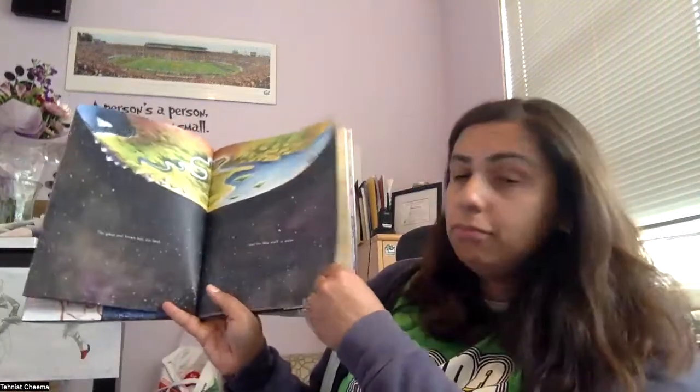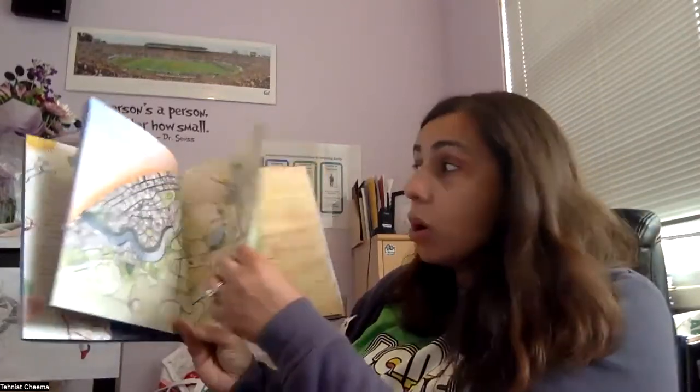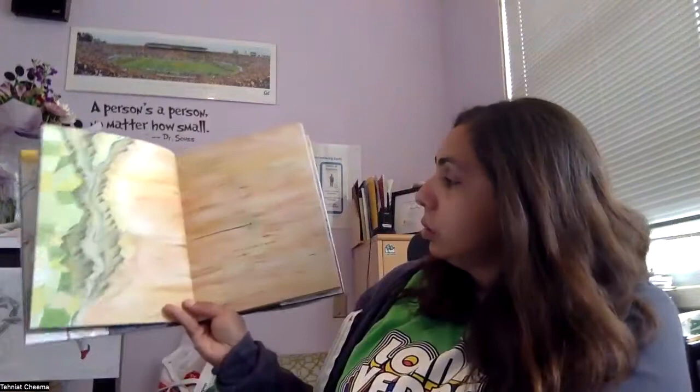The green and brown bits are land and the blue stuff is, you got it, water. People mostly live on the land in big cities and small towns and tiny villages or just in the middle of nowhere.